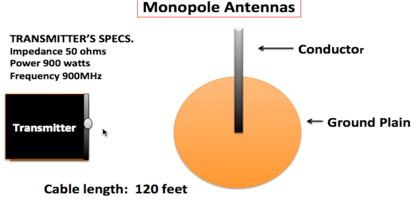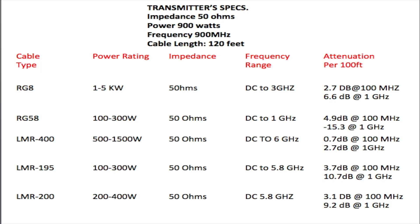So first we're going to look at how to choose the correct coaxial cable of 50 ohms between the transmitter and the antenna, bearing in mind that the length of the coaxial cable is 120 feet. I went ahead and picked some coaxial cables with an impedance of 50 ohms. You can pick other cables like the RG6, which have an impedance of 75 ohms, but there's no point since all we need is 50 ohms. The RG8 has a power rating of between 1 and 5 kilowatts — the power we need is 900 watts, so this is fine. The impedance is 50 ohms and the frequency range is between DC and 3 gigahertz, and we need 900 megahertz, so this is also fine.